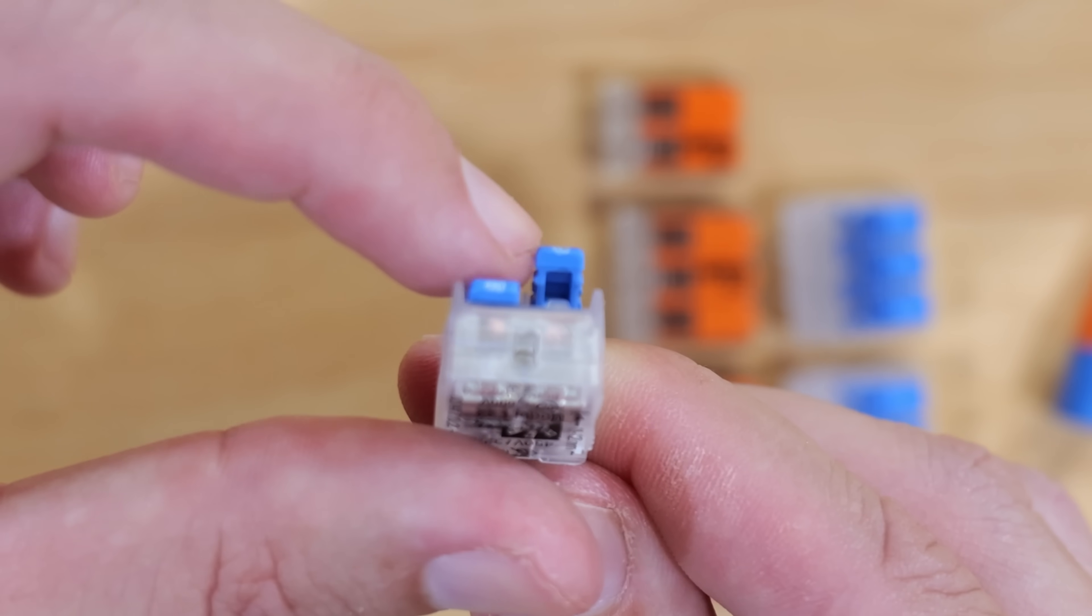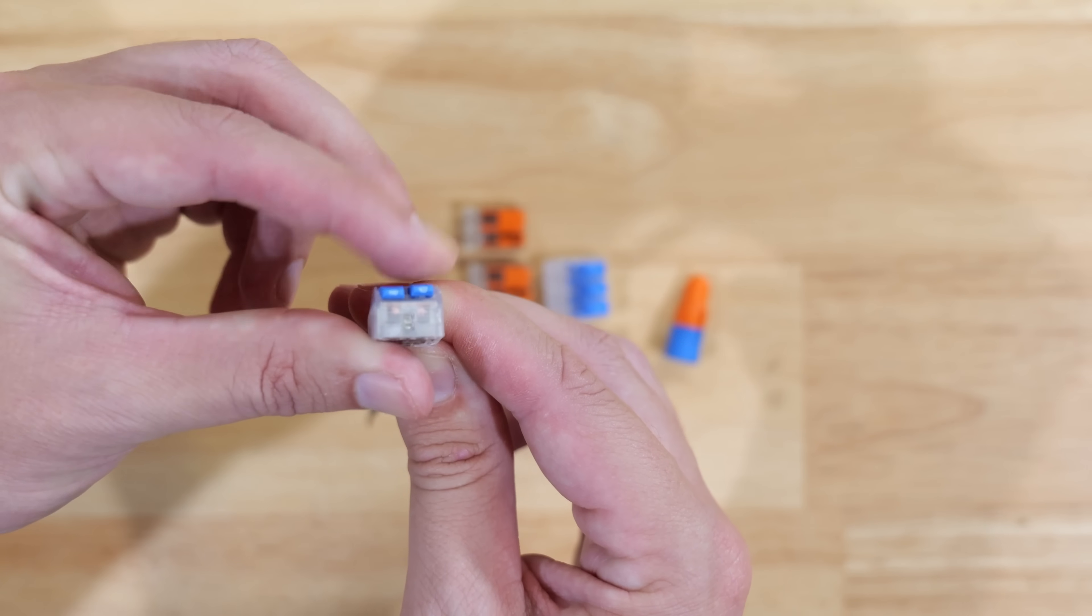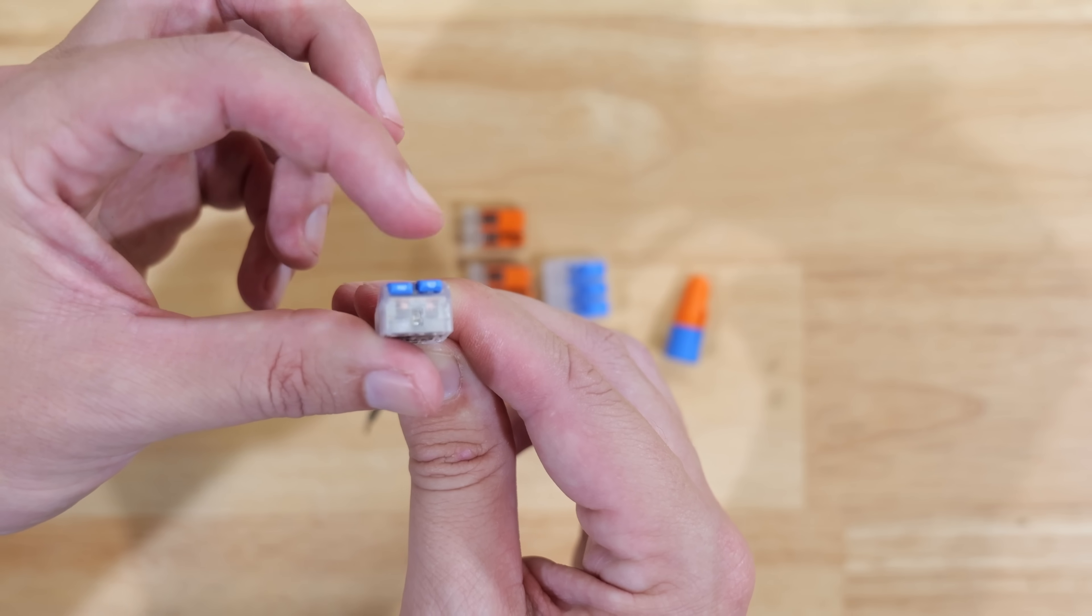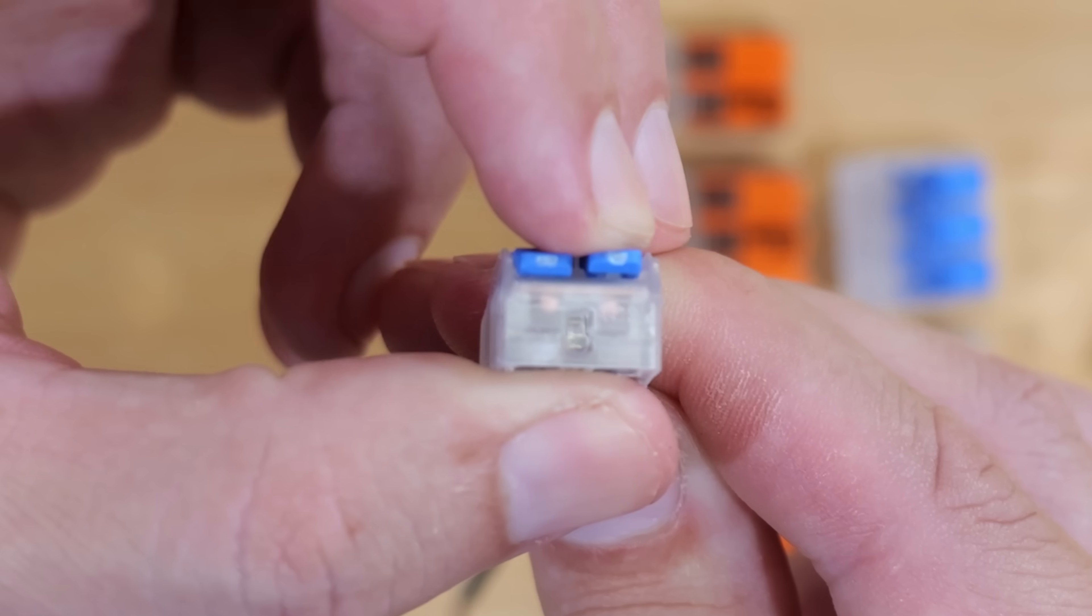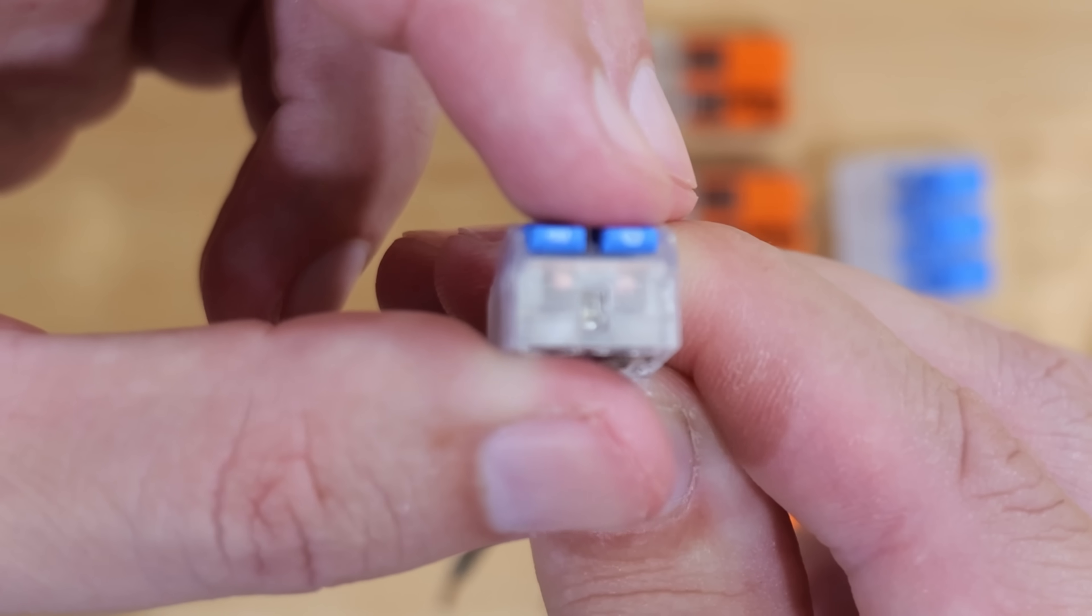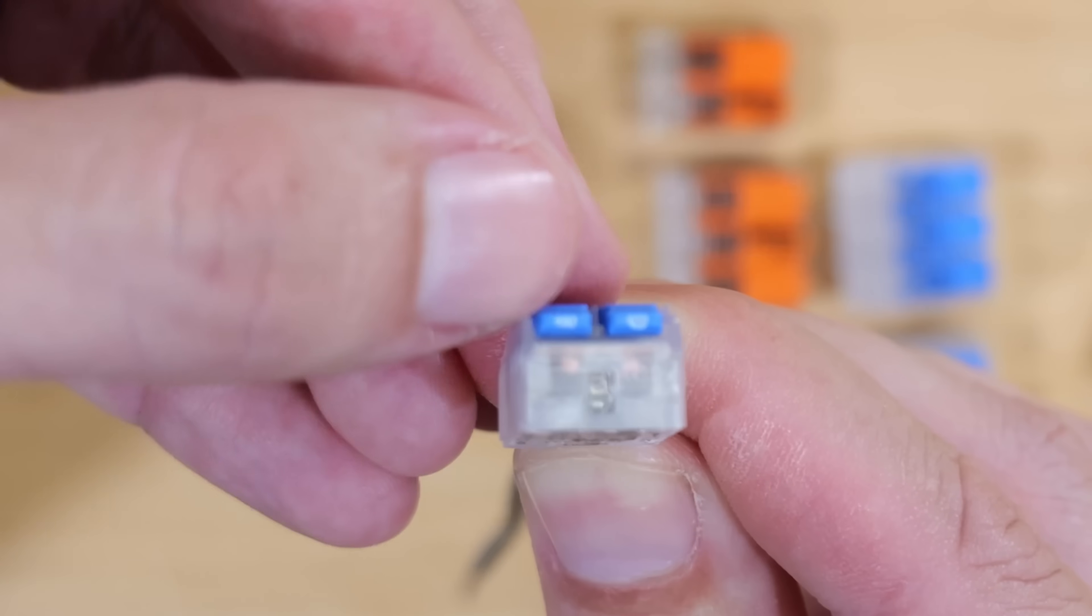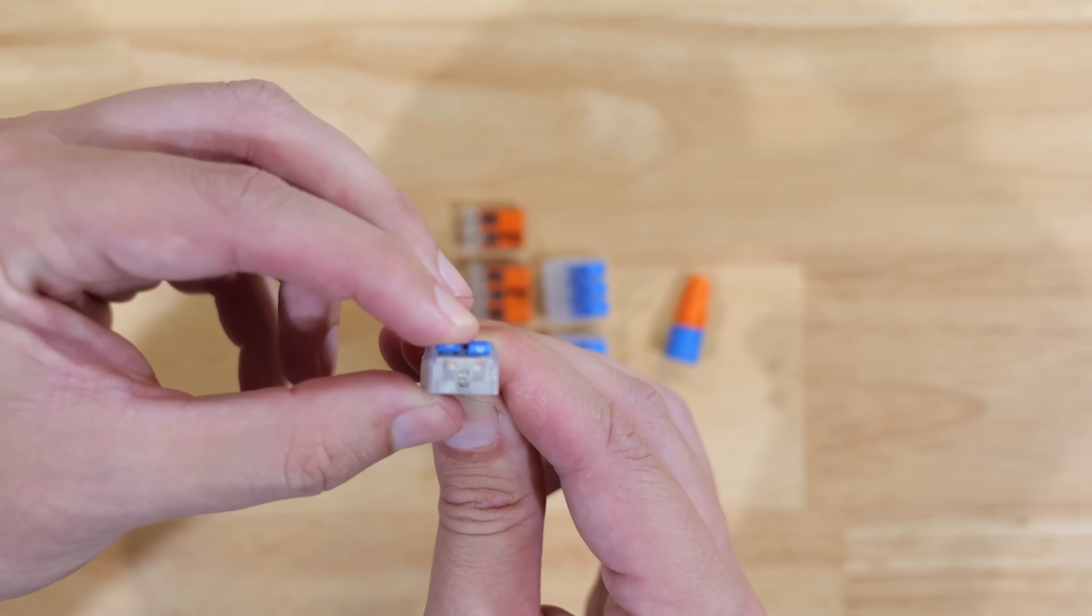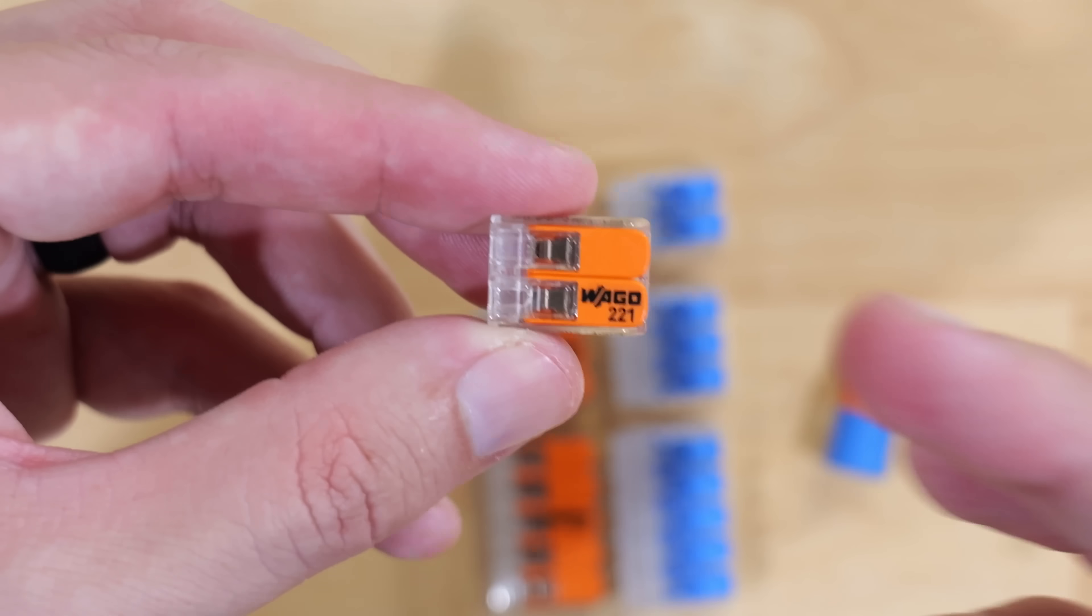You see that little open space there in the lever? When we go to push this lever down, it will actually somewhat snap and lock into place. Watch really quickly. See how it kind of popped into place? It actually makes a little pop noise when it snaps into place. That is what is keeping these levers from accidentally being pulled up.